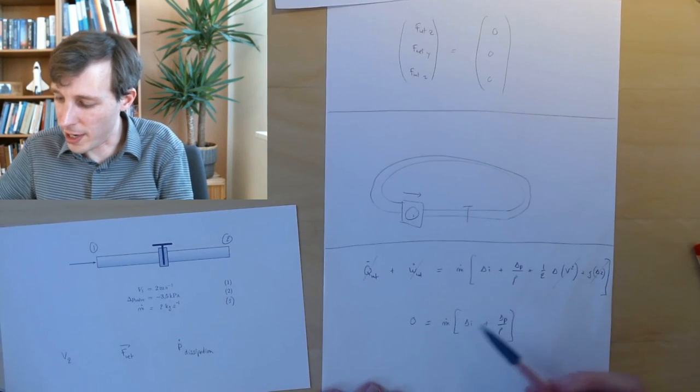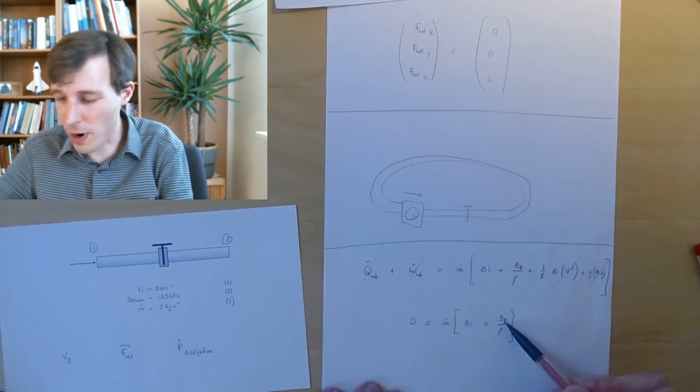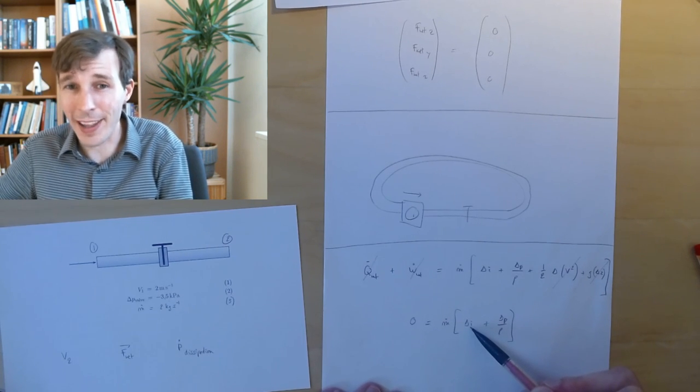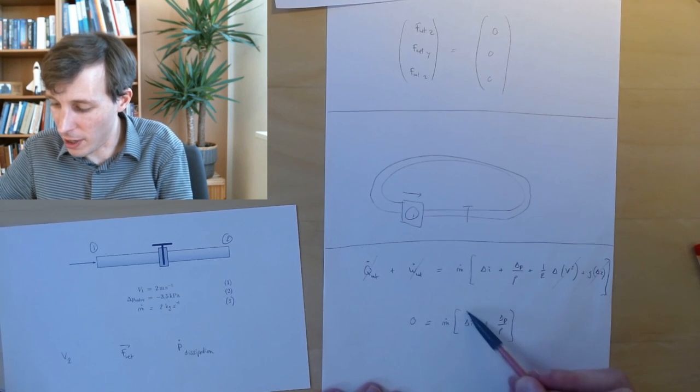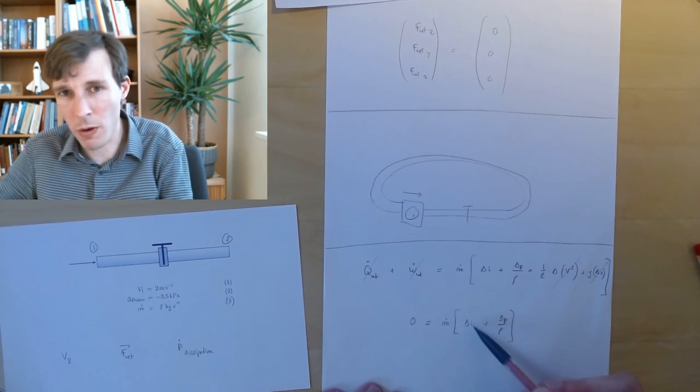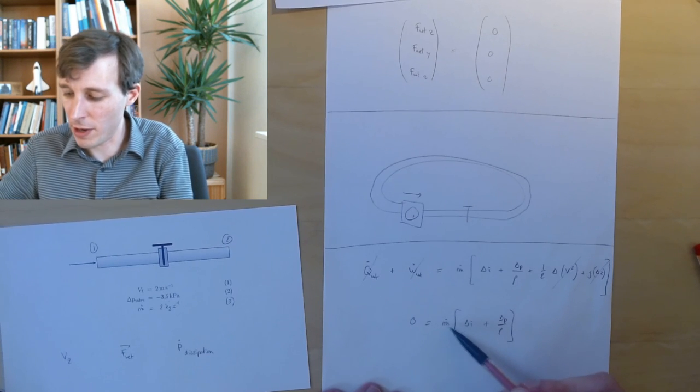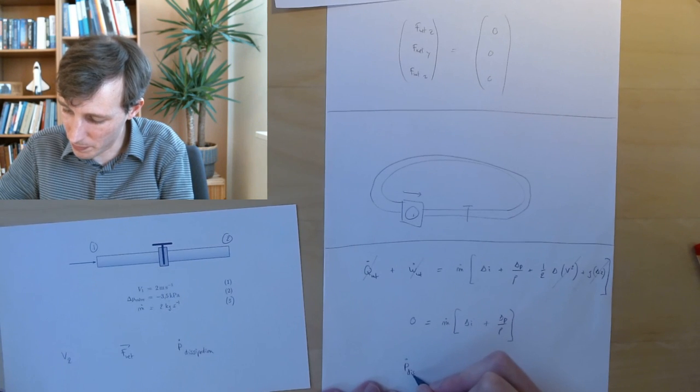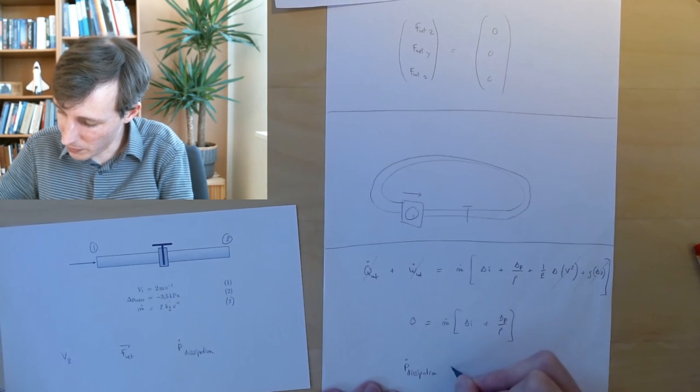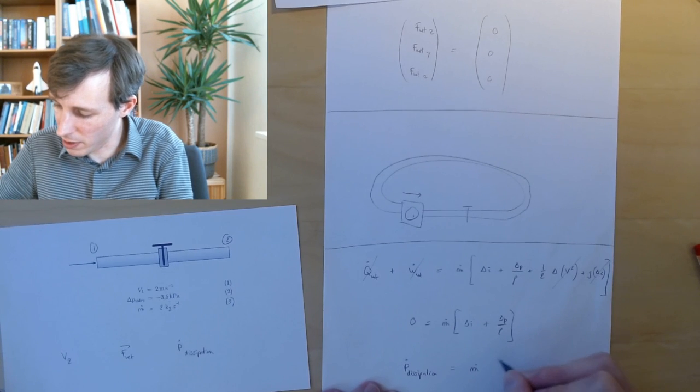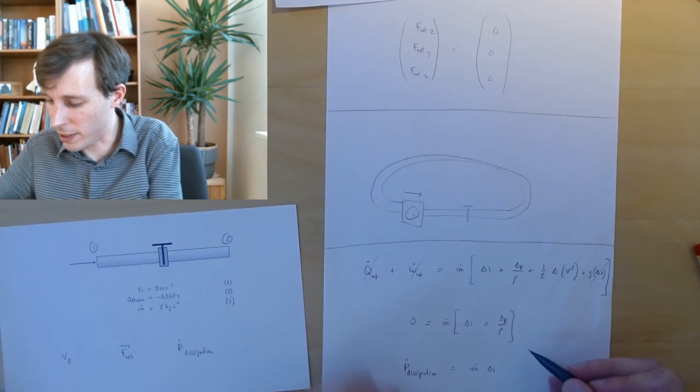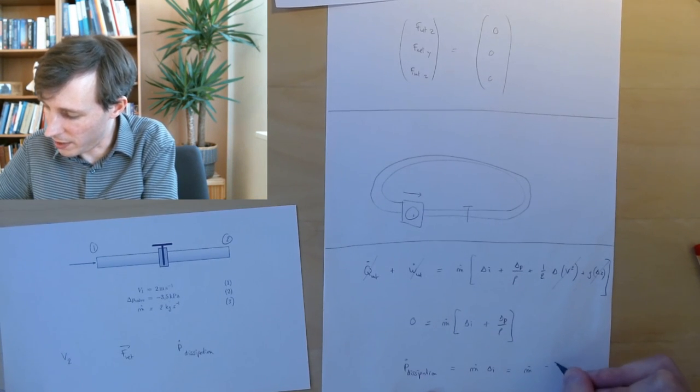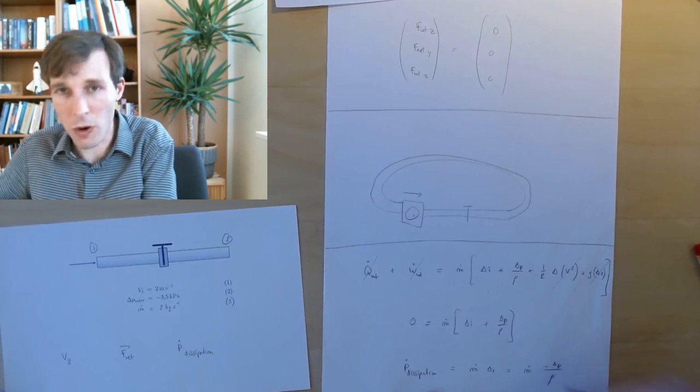This is what I meant earlier when I said the entire change in pressure is going to change in internal energy, delta I. And the power that goes to increase the temperature of the flow, the internal energy of the flow, is M dot delta I. The power dissipation equals M dot delta I, and I can see through this it equals M dot times minus delta P over rho.